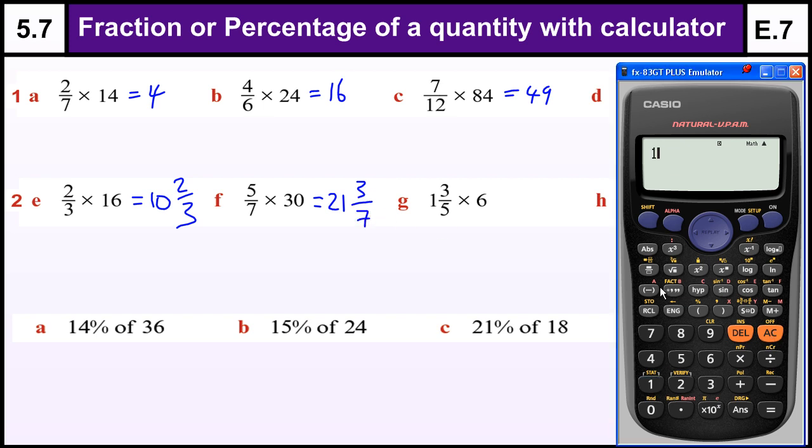And then we've got 1 and 3 sevenths. If I want a whole number of the mix, I need to probably do that. 1 and 3 over 7, come out the fraction, times by 6. Press this to get 8 and 4 sevenths.